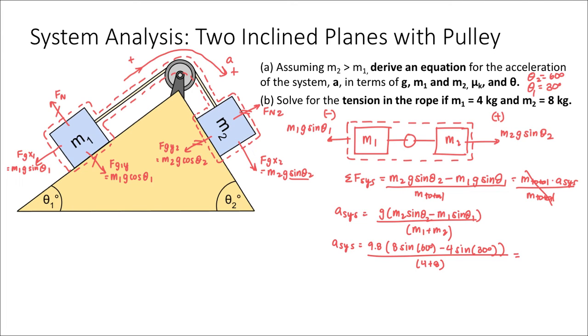So my acceleration would be about 4.02 meters per second squared, and it is positive, and my direction of acceleration I assumed was positive, so that's good. That means that I am indeed correct. The system is accelerating in the direction that I thought it was.